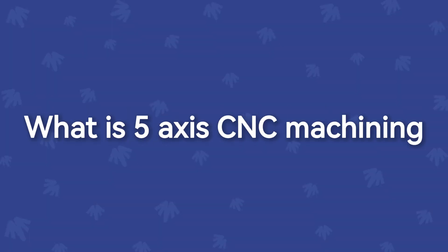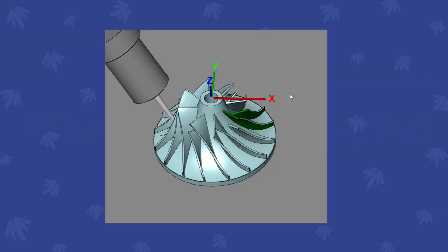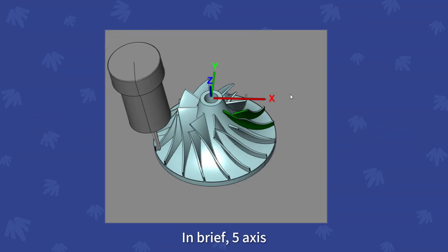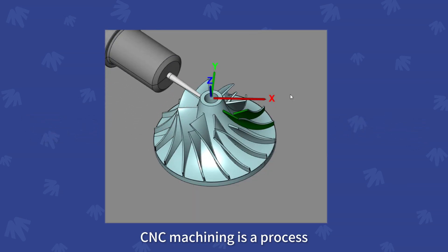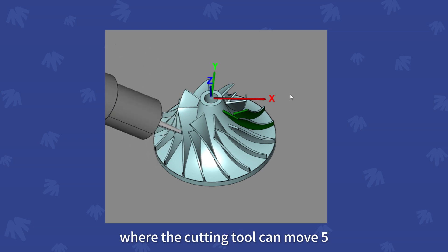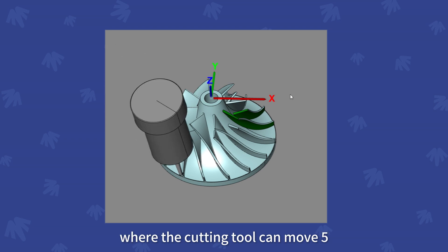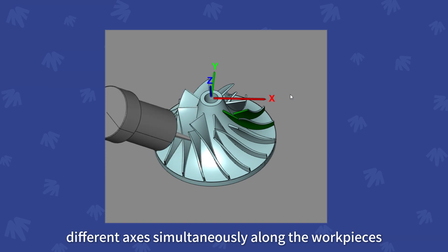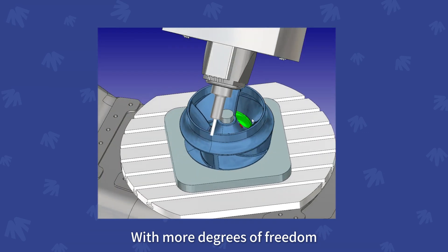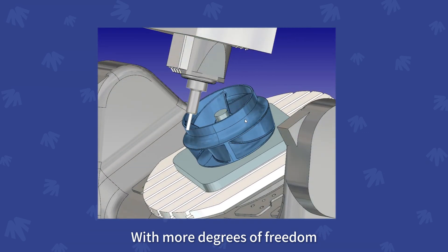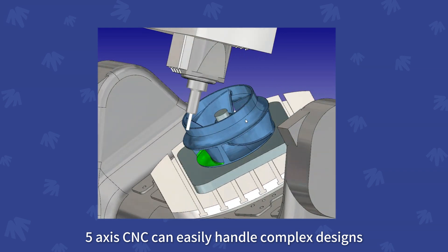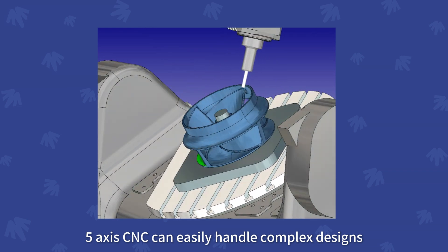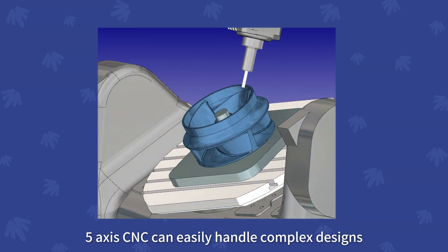What is 5-axis CNC machining? In brief, 5-axis CNC machining is a process where the cutting tool can move along 5 different axes simultaneously along the work piece. With more degrees of freedom, 5-axis CNC can easily handle complex designs.